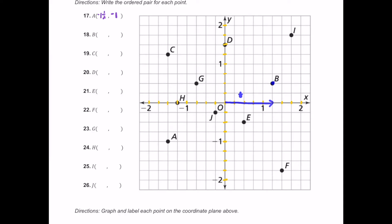Point B is over here in quadrant one. To get there, move positive one and one fourth to the right, and then move up half — so that's plus one half. The ordered pair is one and a quarter comma one half.